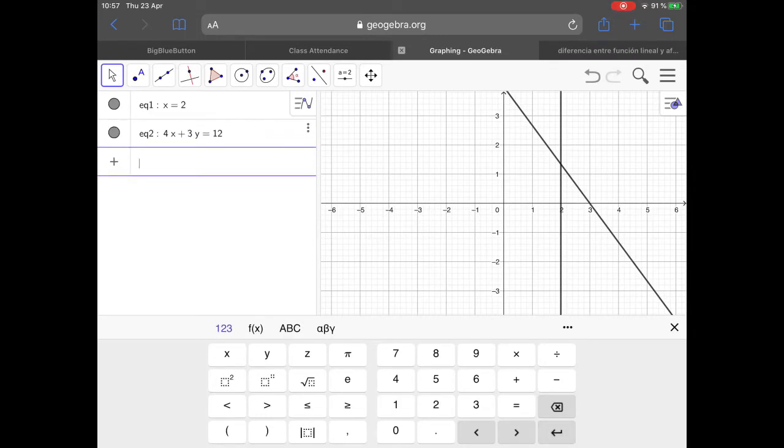Then I've got another constraint: 2y is less than or equal to x. So I am just going to draw the line 2y equals x, which is that line there.